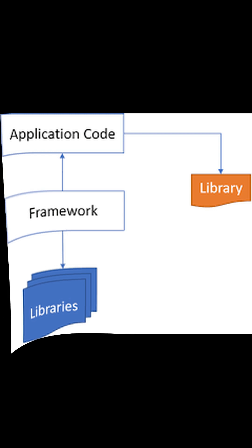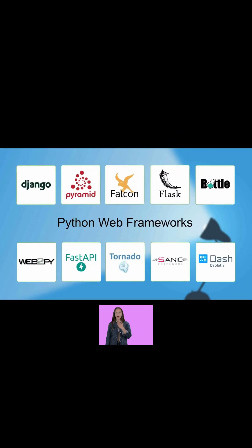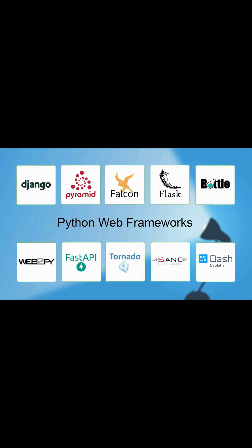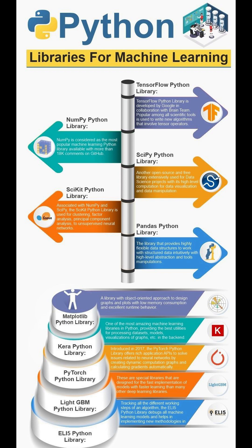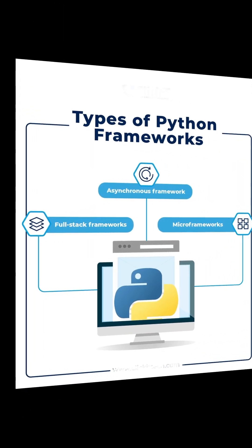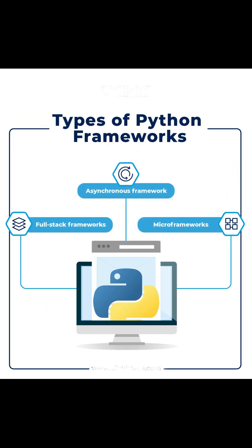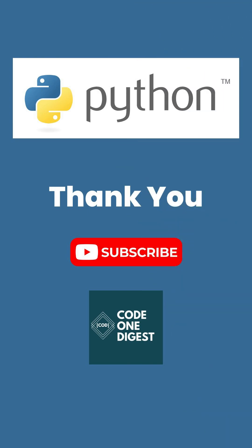Libraries provide developers with predefined functions and classes to boost the development process, whereas a framework is the foundation upon which developers build applications. TensorFlow, NumPy, and Keras are a few popular Python libraries, whereas full-stack framework, micro-framework, and asynchronous framework are major types of Python frameworks.